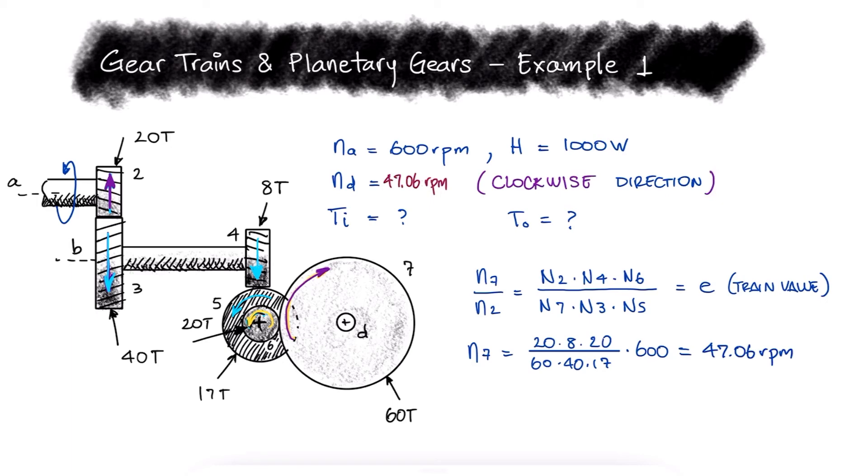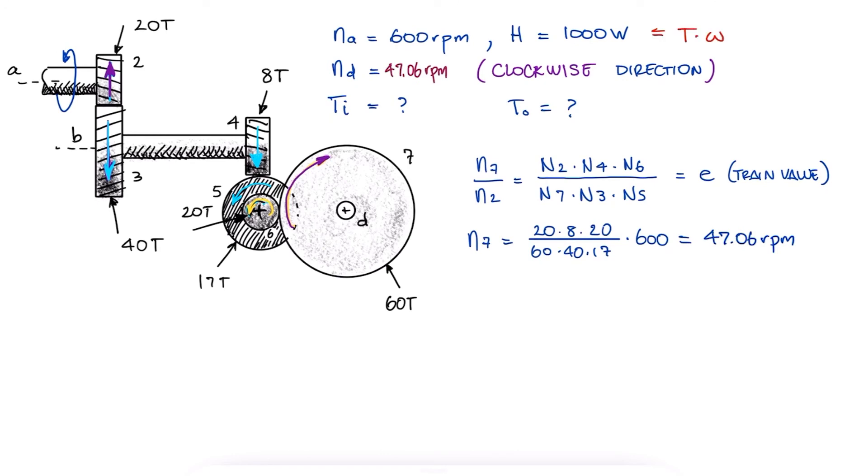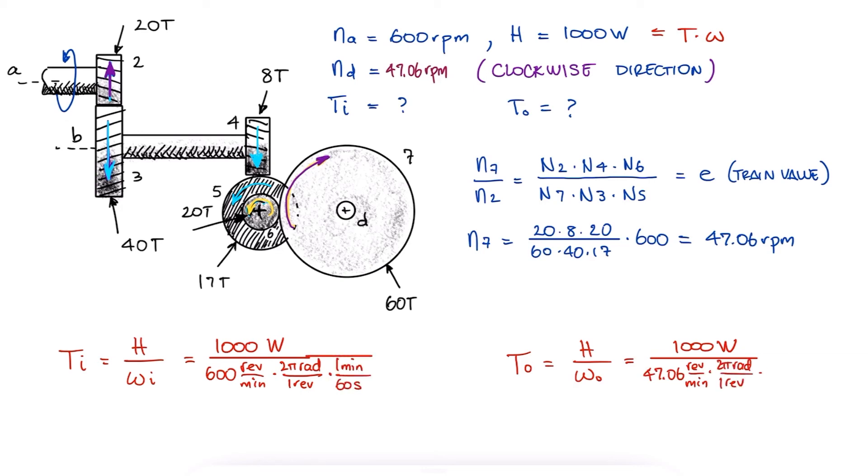To address the torque question, we know that power is equal to torque times the angular velocity in radians per second. Since we're assuming that the system is 100% efficient, we can find the torque by using the same power value at the input and at the output. The angular velocity can be found if we multiply by 2π radians for every revolution and divide by 60 seconds for every minute.